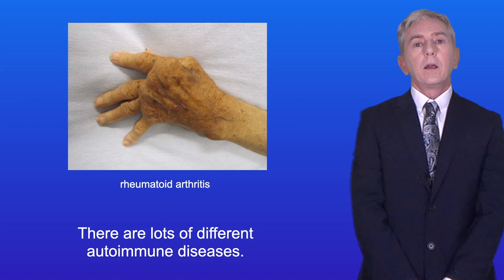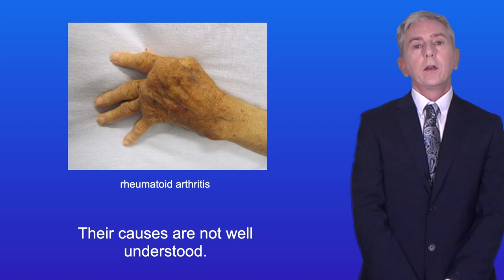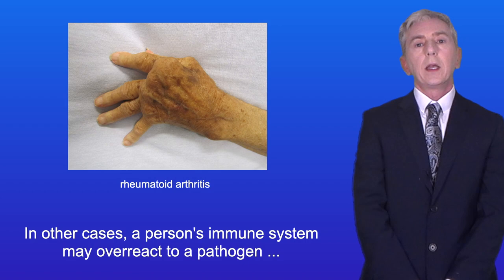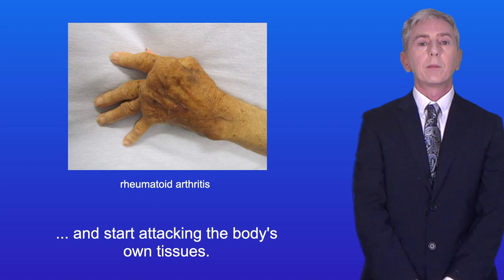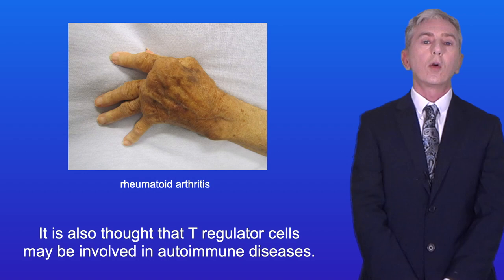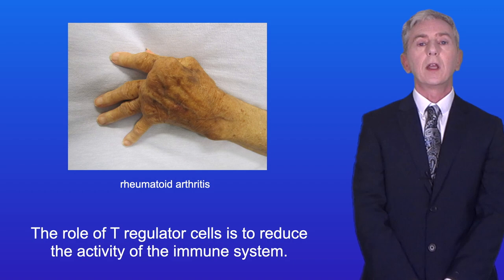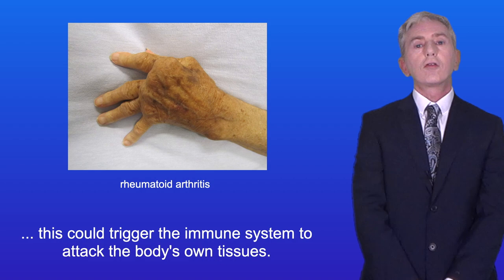There are lots of different autoimmune diseases, and their causes are not well understood. Genetics do play a role, as many autoimmune diseases appear to run in families. In other cases, a person's immune system may overreact to a pathogen and start attacking the body's own tissues. It's also thought that T-regulator cells may be involved in autoimmune diseases. The role of T-regulator cells is to reduce the activity of the immune system, so if they are not functioning correctly, this could trigger the immune system to attack the body's own tissues.